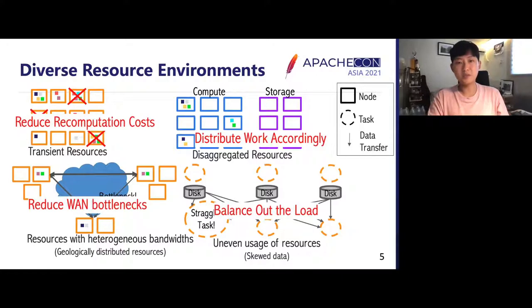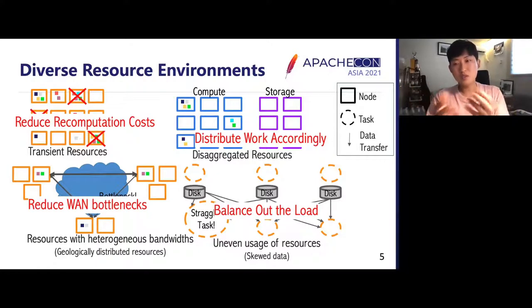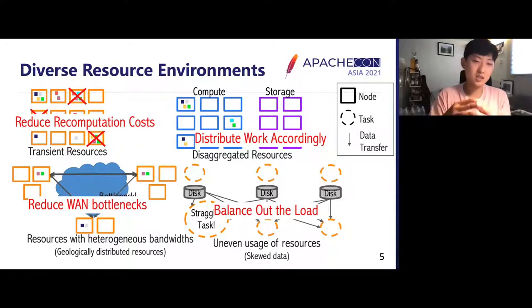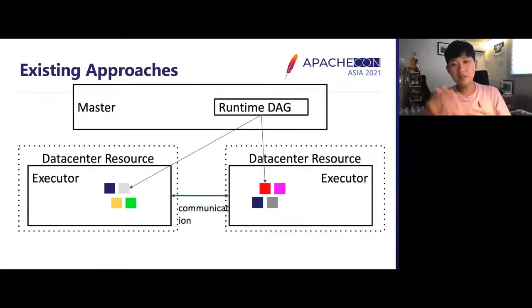Each of these problems has different approaches. With preemptive transient resources, recomputation cost must be reduced. With disaggregated resources, work has to be distributed accordingly across compute and storage nodes. With heterogeneous bandwidths, wide area network bottlenecks should be reduced. With skewed datasets, the load has to be balanced out. Concretely, the distributed runtime schedules tasks on multiple executors that run with data center resources while communicating with each other.